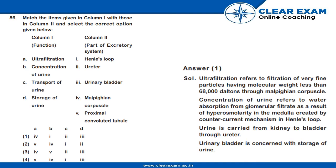Welcome back. Question number 86: match the items given in column one with those in column two and select the correct option given below. This is column one and this is column two. These are the given options. The answer is option one.